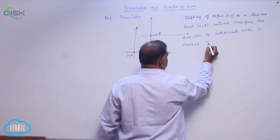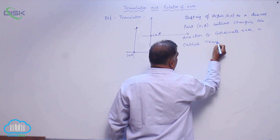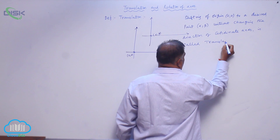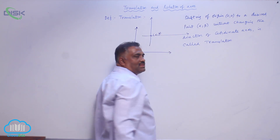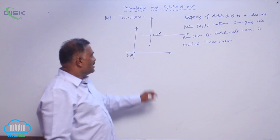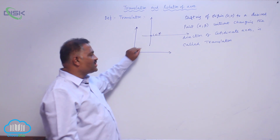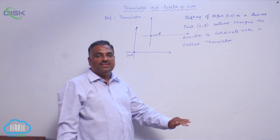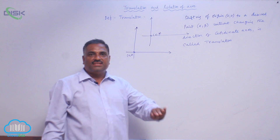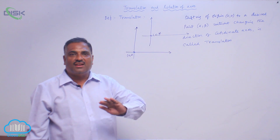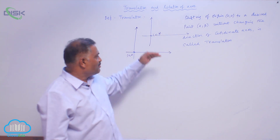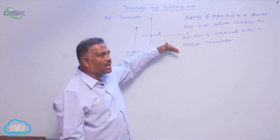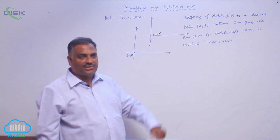This is called translation. So in translation, the origin is shifted, but the direction of the axis remains unaltered — that means both axes have the same direction.